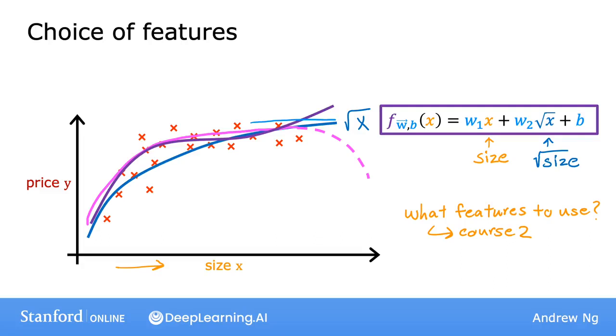For now, I just want you to be aware that you have a choice in what features you use and by using feature engineering and polynomial functions, you can potentially get a much better model for your data.